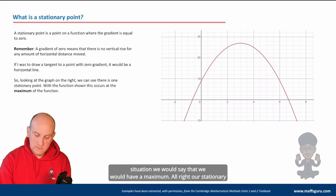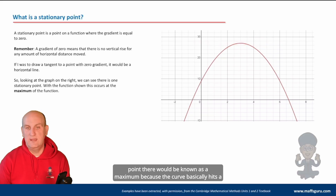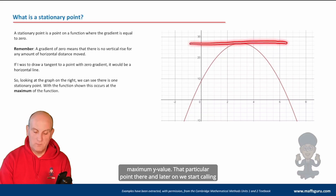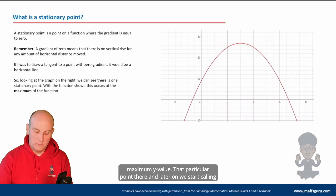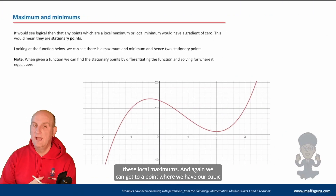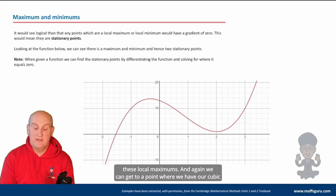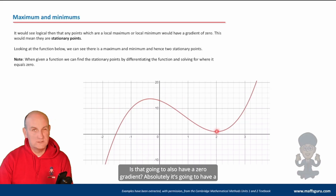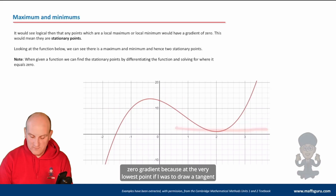We can find that, and in this situation we would have a maximum — our stationary point there would be known as a maximum because the curve hits a maximum y value at that particular point. Later on we start calling these local maximums. And we can also get to a point on the cubic where the bottom point is going to also have a zero gradient.